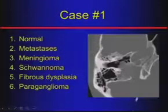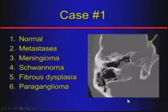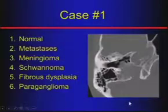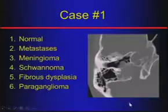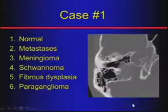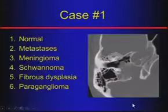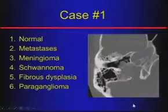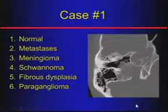Things we might think about here: could this be normal? Could it be one of those marrow-replacing processes — METS, myeloma, lymphoma, leukemia, plasmacytoma? Something like a meningioma or schwannoma? What about fibrous dysplasia? That can be confusing — we look for the ground glass, but sometimes we have the sclerotic or cystic types. Or something like a paraganglioma.